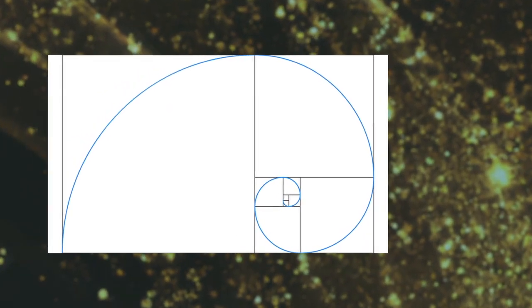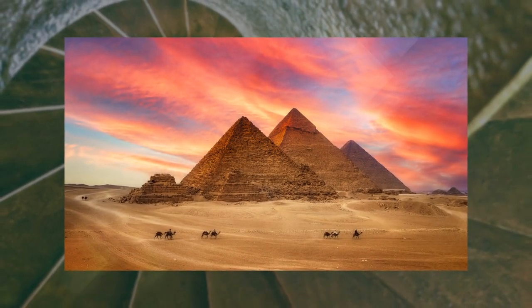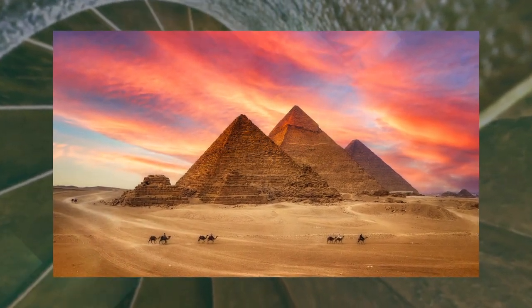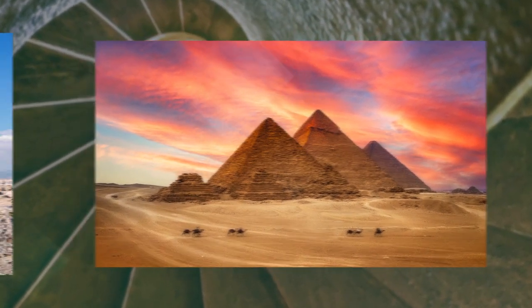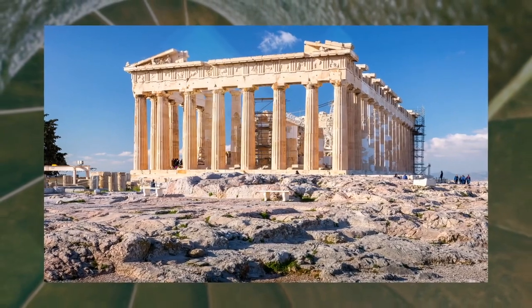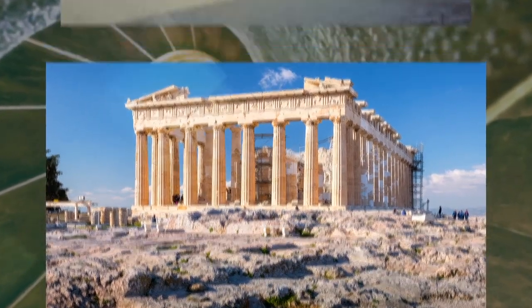There's that nautilus shell. Many ancient cultures utilize this ratio to design some of the wonders of the ancient world: the great pyramids of Giza in Egypt, the Parthenon in Greece, the great mosque of Kirwan in Tunisia.